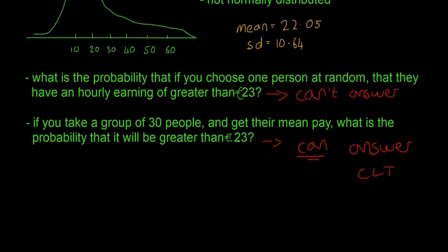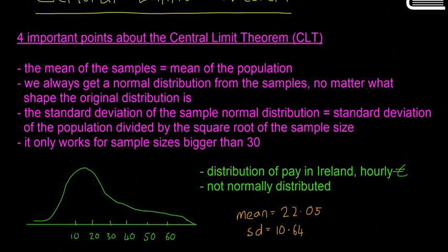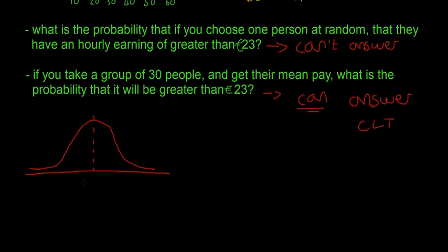The central limit theorem says that if we take, say, 1,000 samples of 30 people, we're going to end up with a normal distribution curve. The mean of the samples equals the mean of the population. So this value right here is 22.04, because that's the mean of the population. It will also be the mean of the samples.